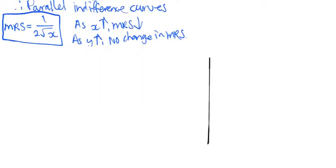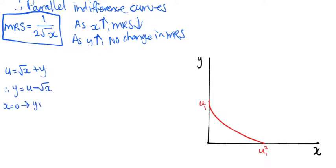Since each indifference curve is based on a given amount of U, the intercepts can be determined by treating the U as constant, and writing the equation as y equals U minus square root of x. Setting x equals 0 and solving for y gives the y-intercept. Setting y equals 0 and solving for x gives the x-intercept.